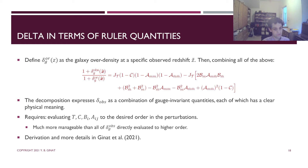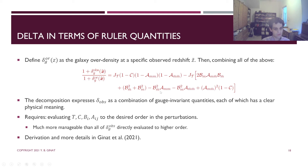All you have to do to get a higher-order expression for the observed galaxy overdensity is to evaluate the cosmic rulers and cosmic clocks to the desired order in perturbation theory. This should be simpler than evaluating delta G observed to a higher order in perturbation theory directly. This decomposition is into gauge-invariant quantities — all of them — and they each have very clear physical meanings individually.